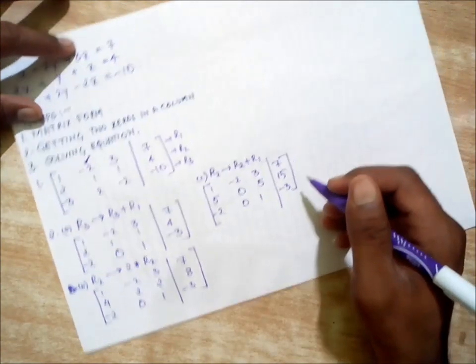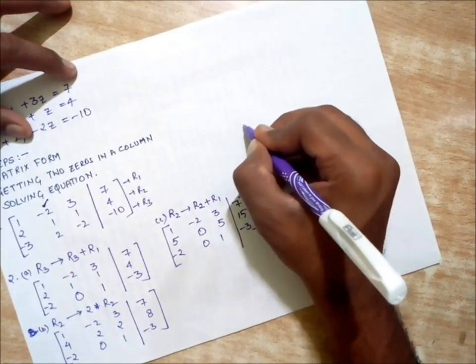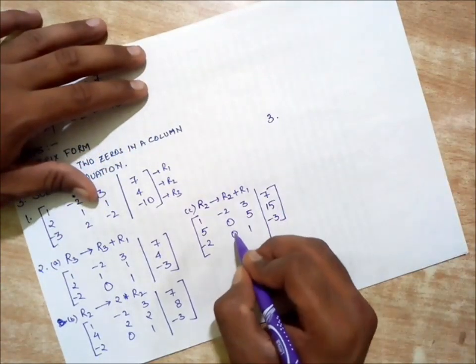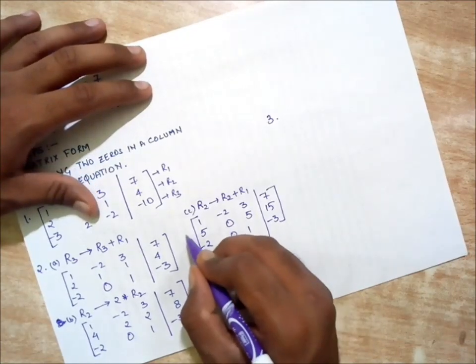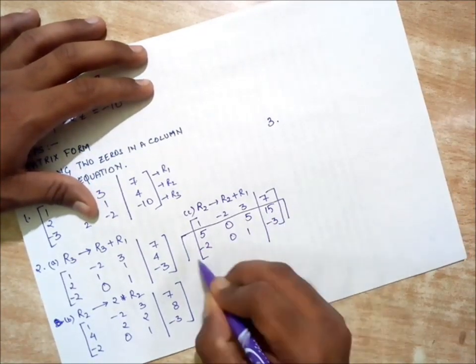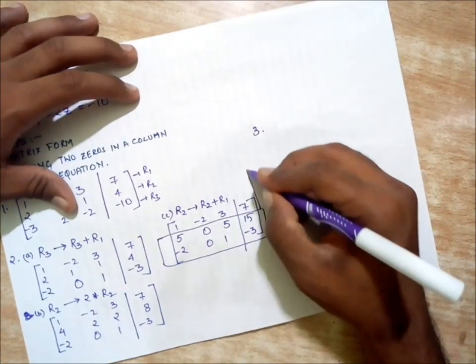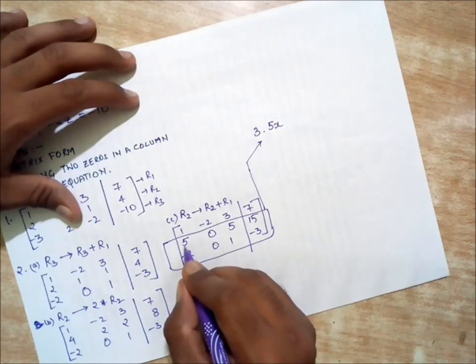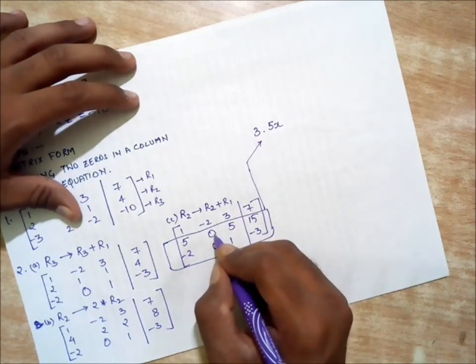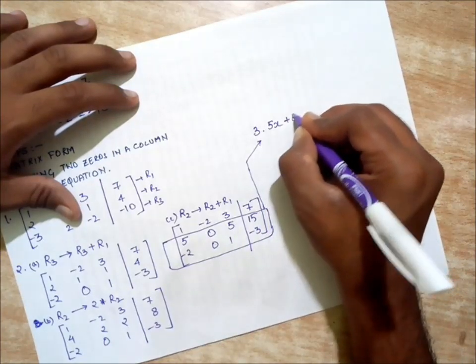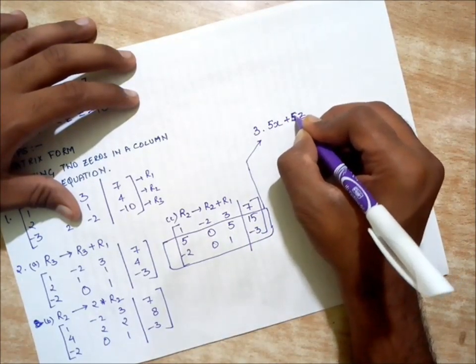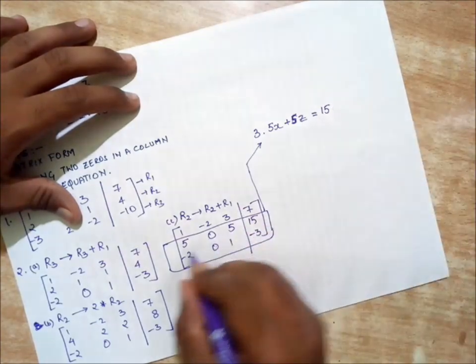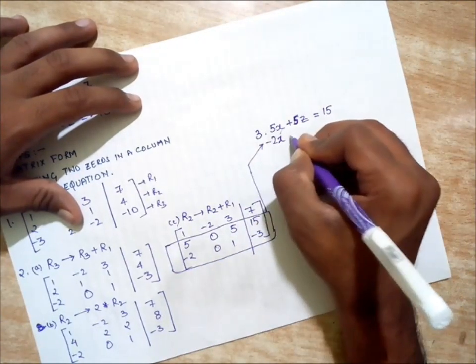Let's move on to step number three. Step three says we need to solve the equation. When we are getting two zeros in any of the two rows, we will be selecting those two rows as our new equations. We can write these equations as 5X plus 5Z equals 15, and -2X plus Z equals -3.